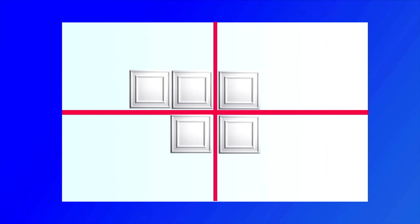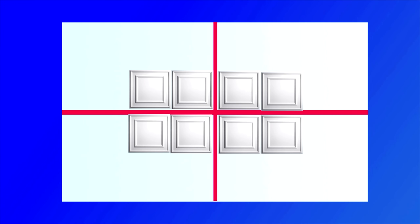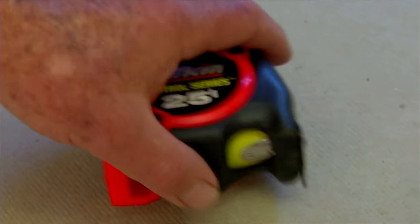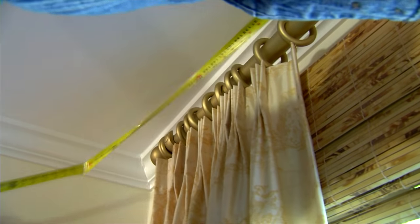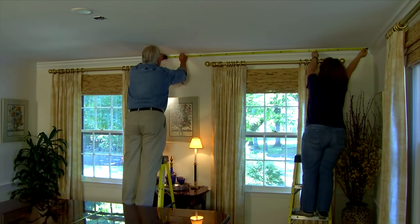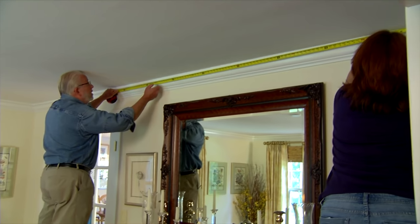Laying out the tile pattern typically involves using intersecting lines to find the center of the room, then installing the tiles from there outward using the lines as guides. To do that, we measure each wall, then locate and mark the center point. We do this on all four walls.